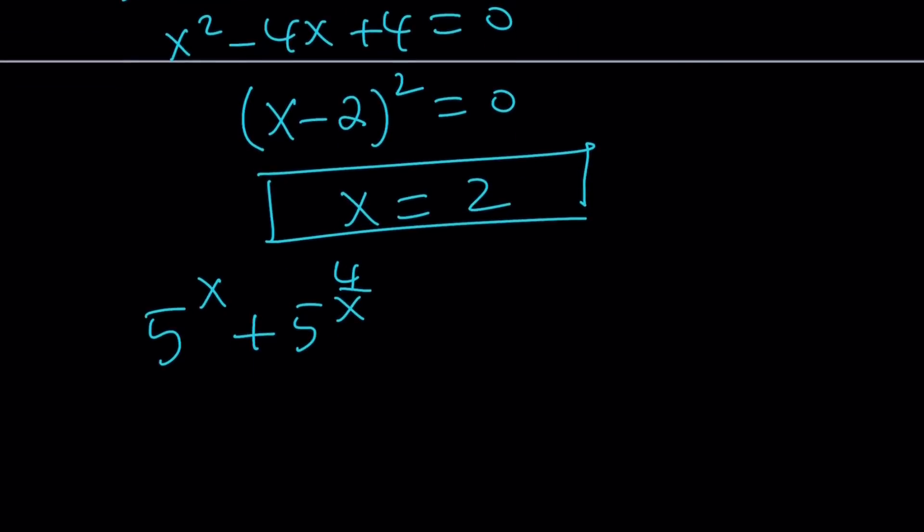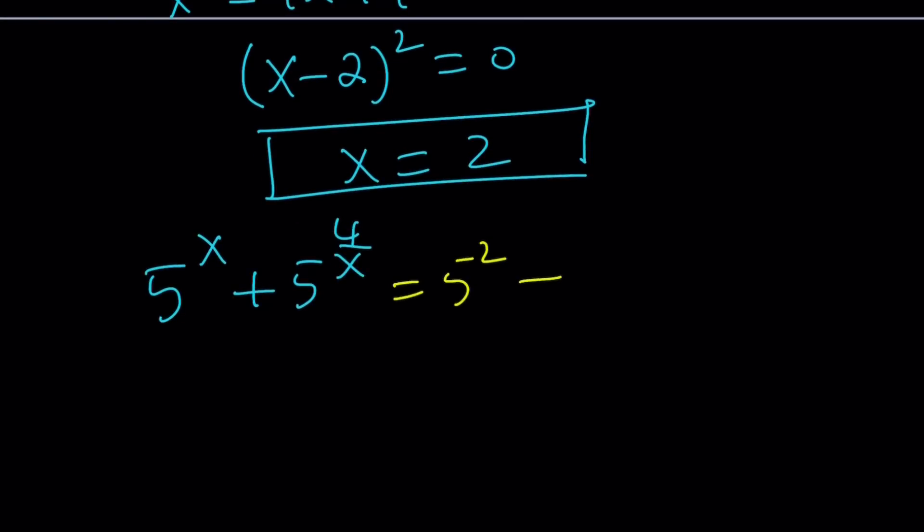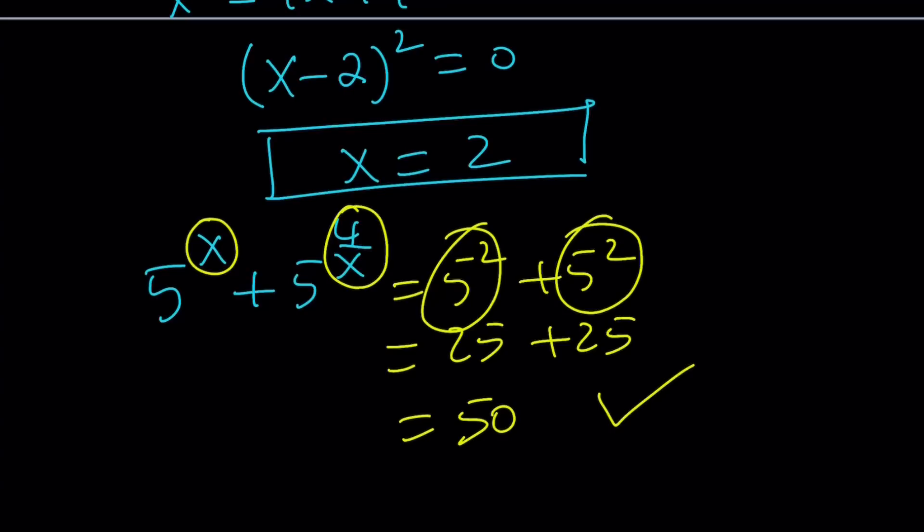From here, if you plug in x equals 2, you're going to get 5 to the second power plus 5 to the second power, which is 25 plus 25, that equals 50. So x equals 2 works, but not only that, notice that we get the 25 twice because x is only 2 if x equals 4 over x. When we have the same power, we split up the 50 into two pieces, 25 and 25, and that makes sense because you have to meet in the middle where they are equal.